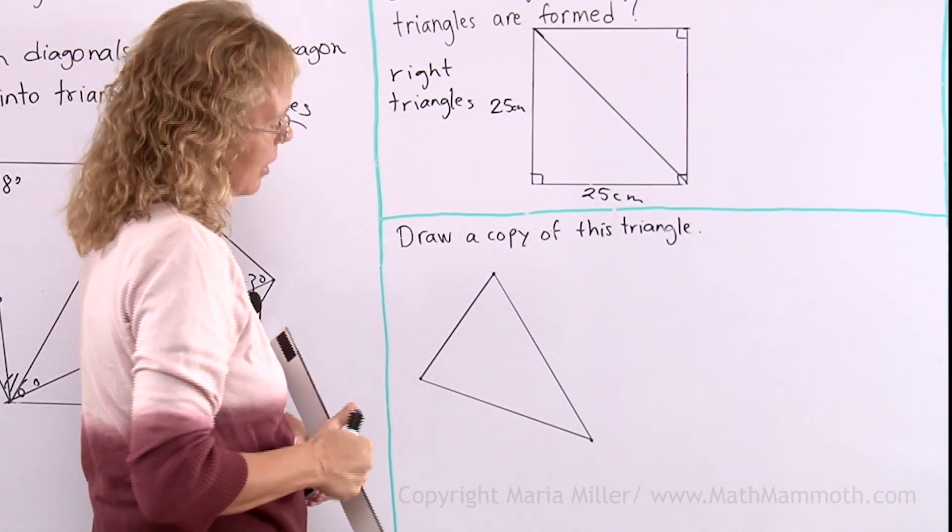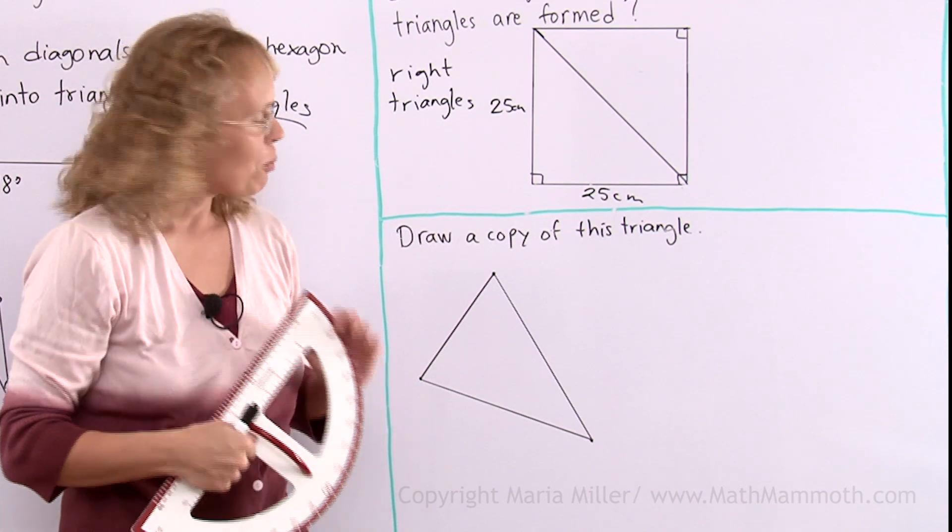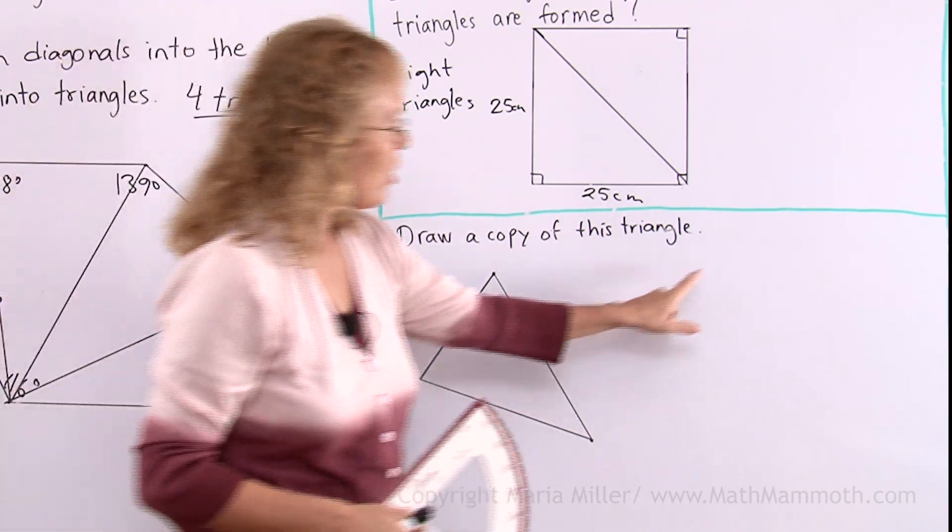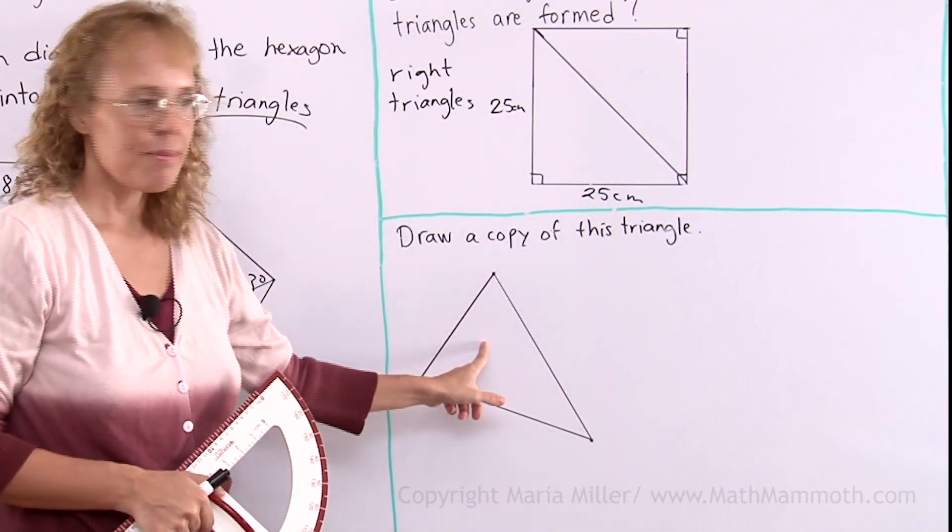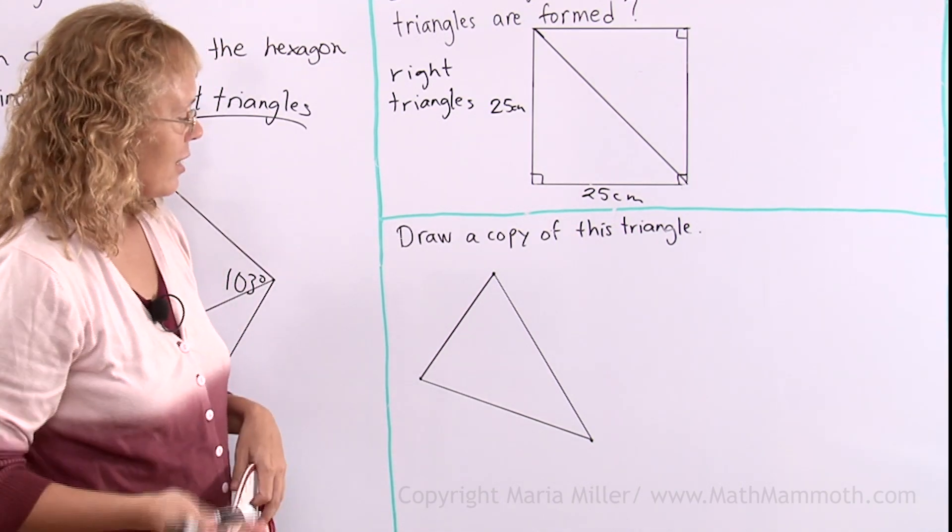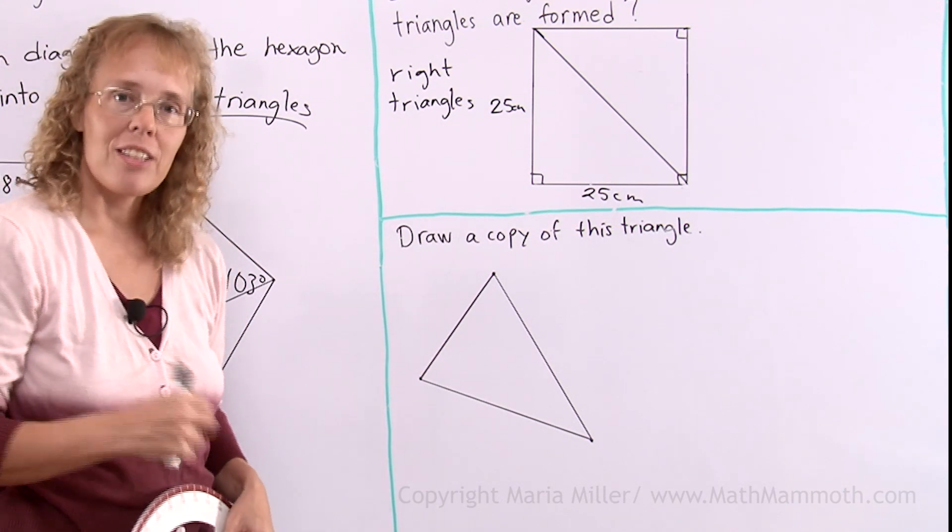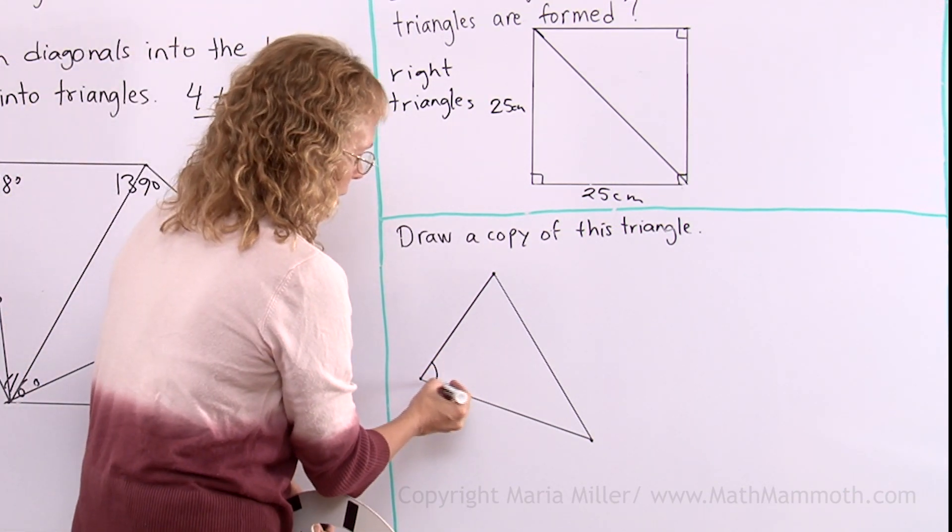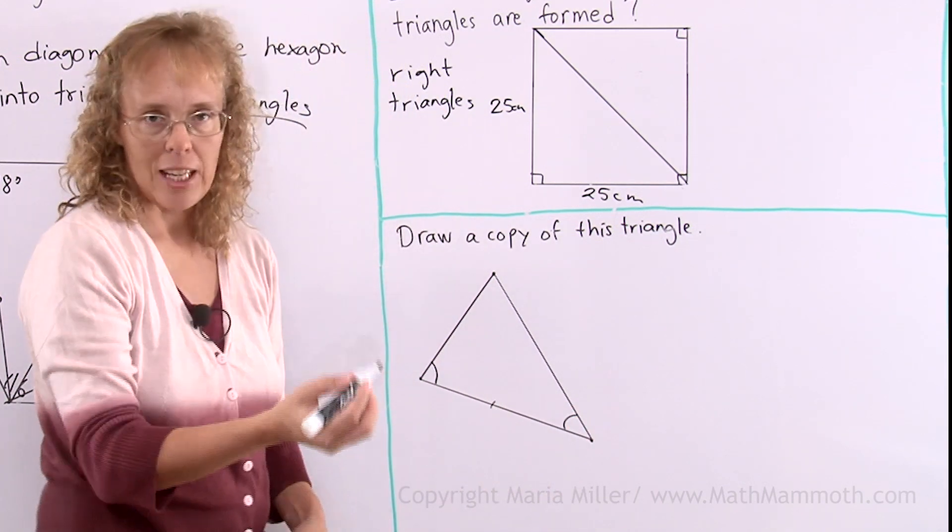Draw a copy of this triangle. Now I want to show you something kind of neat. What do I need to be able to copy this triangle? If I want to draw a copy of it here, what do I need to know from this triangle? You might say that I need to know all the angles and all the sides, how long the sides are, how big the angles are. But it turns out I don't need all that information. All I need to do is measure this angle or measure two angles and measure the side between those two angles.